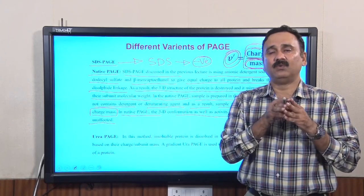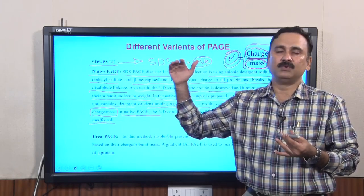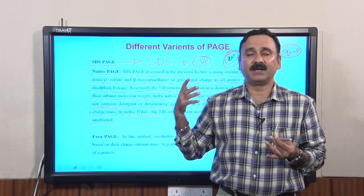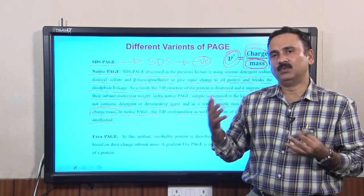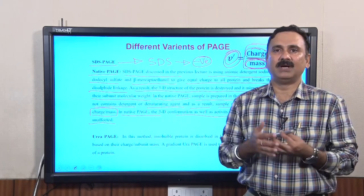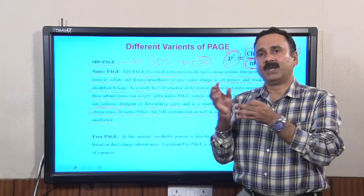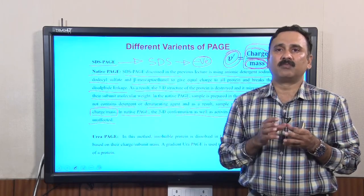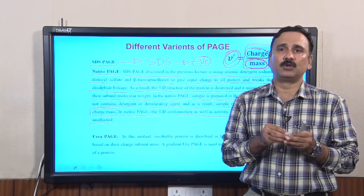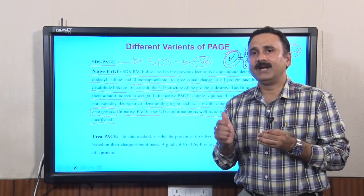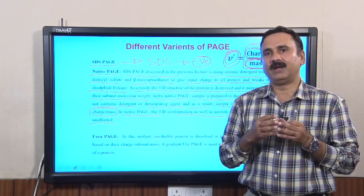If you want to study the activity of a particular protein and judge whether your purified recombinant protein is catalytically active, you can run it on a native PAGE and perform activity staining. The three-dimensional conformation is also retained, so you can modulate conditions to check whether the protein maintains its native state.